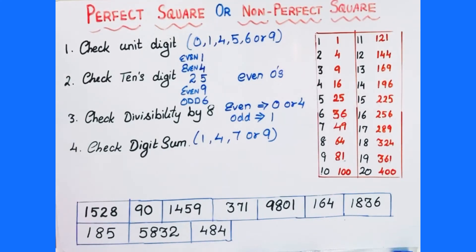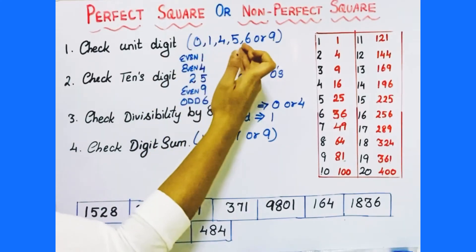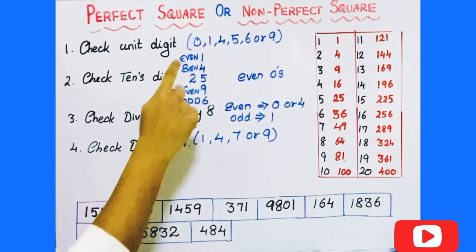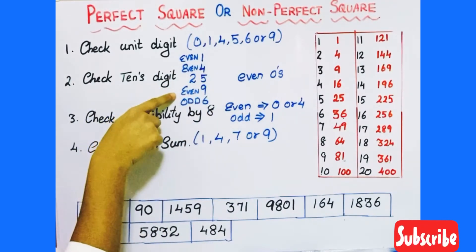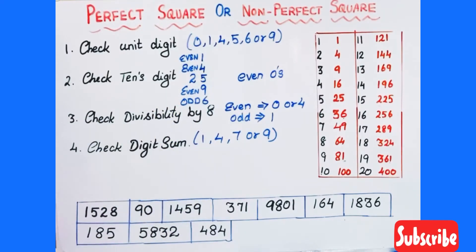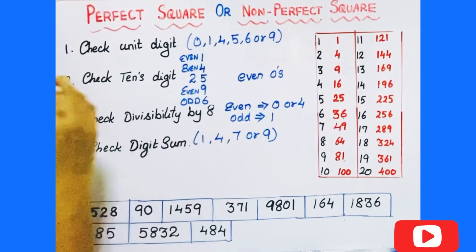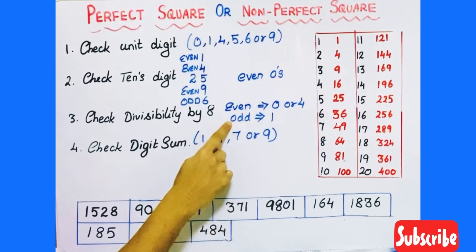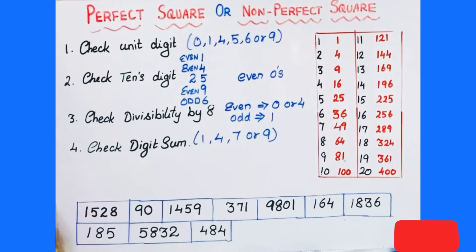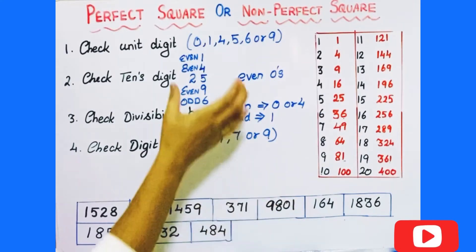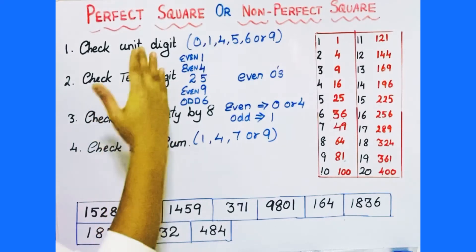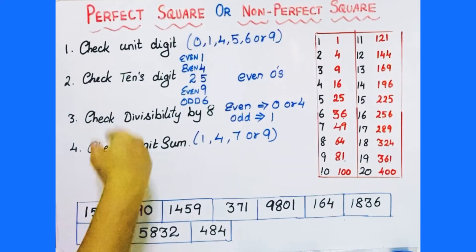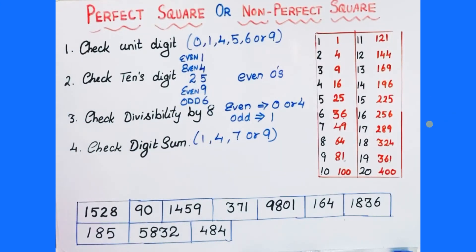So to summarize: a perfect square number has unit digit 0, 1, 4, 5, 6, or 9. If the unit digit is 1, 4, 5, or 9, the tens place is an even number. If the unit digit is 6, the tens place is an odd number. When divided by 8, an even perfect square leaves remainder 0 or 4, and an odd perfect square leaves remainder 1. And the digit sum is always 1, 4, 7, or 9. These are the four tests to check whether a number is a perfect square or not. A perfect square will pass all four tests. If a number fails any of these tests, it is a non-perfect square.